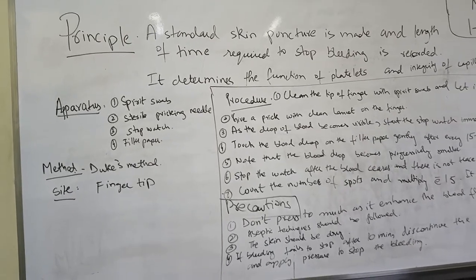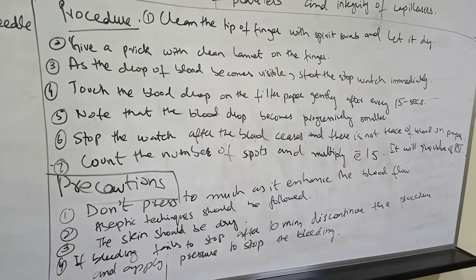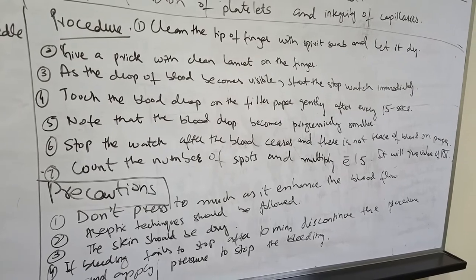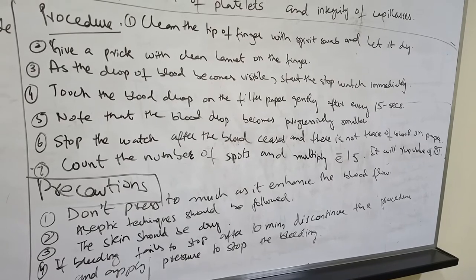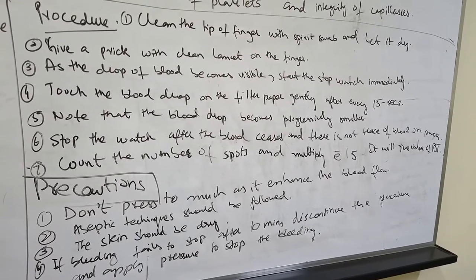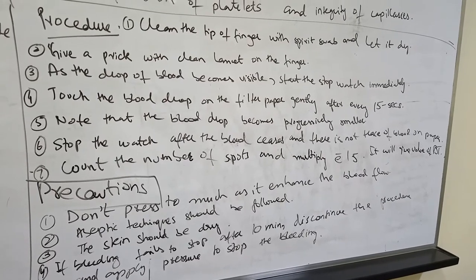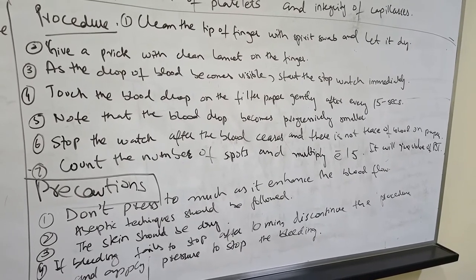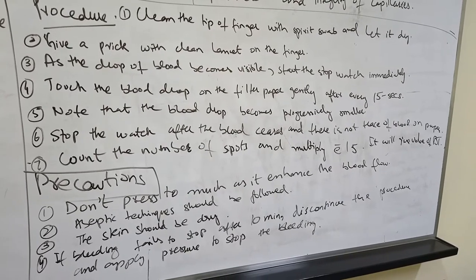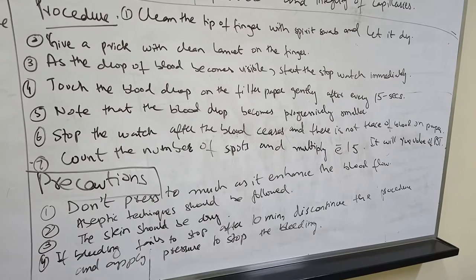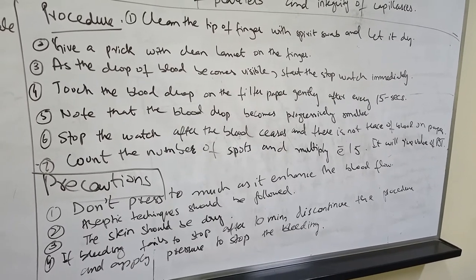Now the procedure. We usually take the tip of the finger. First we will clean the tip of the finger with the spirit swab and let it dry. Then we will give a prick with the sterile needle on the finger. As the drop of blood becomes visible, immediately start the stopwatch and touch the blood drop on the filter paper gently. Remember, do not press your finger on the filter paper — only apply blood to the filter paper.